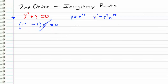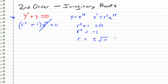The characteristic equation is r squared plus one equals zero. Moving the one to the other side, r squared equals negative one. Taking the square root gives plus or minus the square root of negative one, or in other words, plus or minus i. So we have two purely imaginary roots: plus i and minus i.